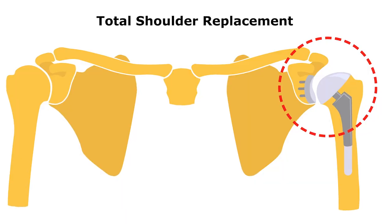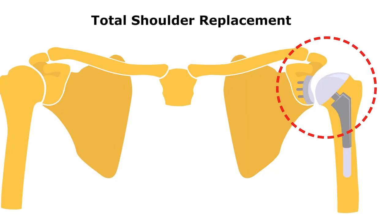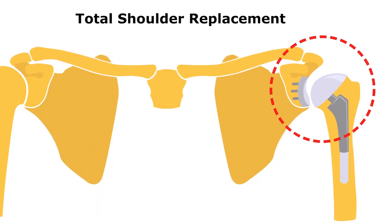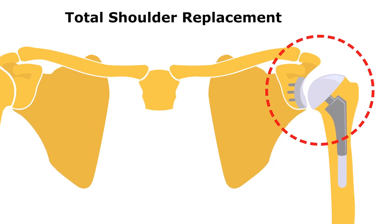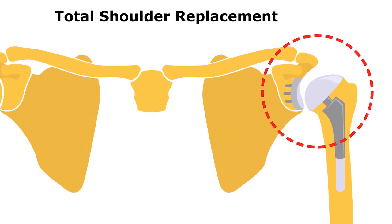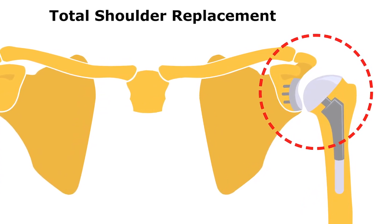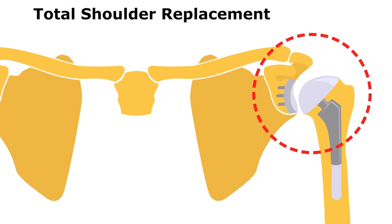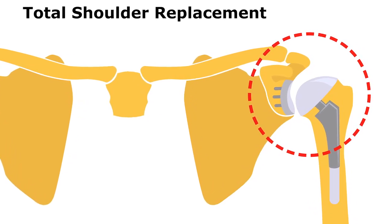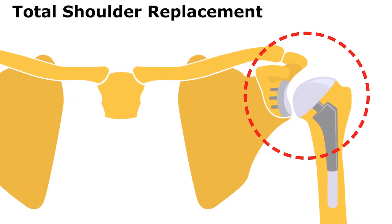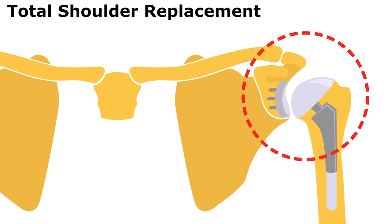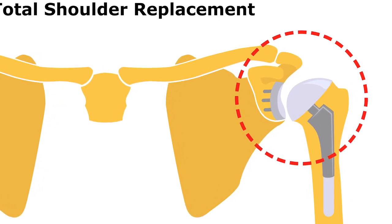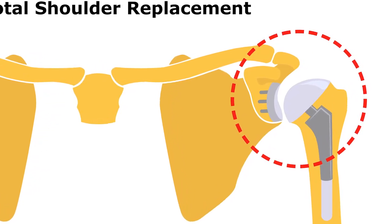A total shoulder or anatomic shoulder arthroplasty replaces both the ball and the socket. The ball is replaced with metal and the socket is replaced with plastic. This allows for better relief of pain, but may include some limitations afterwards as lifting and certain activities could potentially loosen some of that plastic implant.